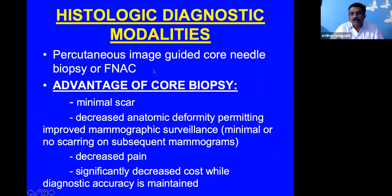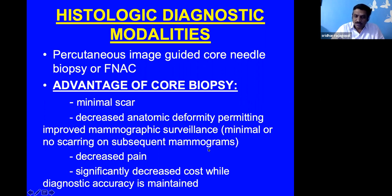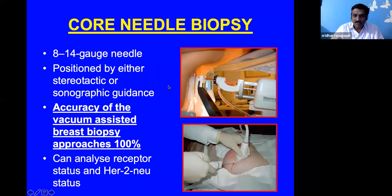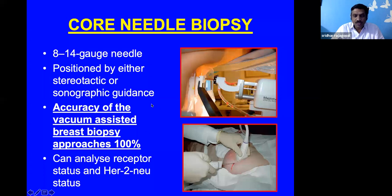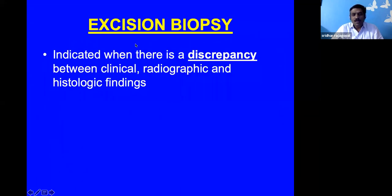Histologic modalities include core needle biopsy or FNAC. The advantage of core biopsy is minimal scarring, subsequent mammograms are not significantly affected, decreased pain, and significantly lower cost compared to open biopsy. Using an 18 to 14 gauge needle under stereotactic or sonographic guidance, vacuum-assisted breast biopsy approaches 100% accuracy and provides sufficient tissue for diagnosis and receptor status analysis. Excision biopsy is done when there is discrepancy between clinical, radiographic, and histologic findings.